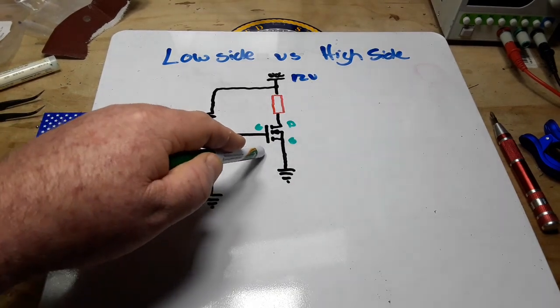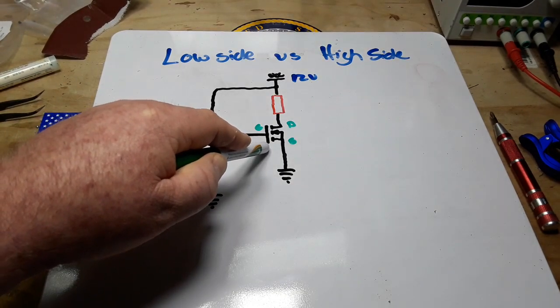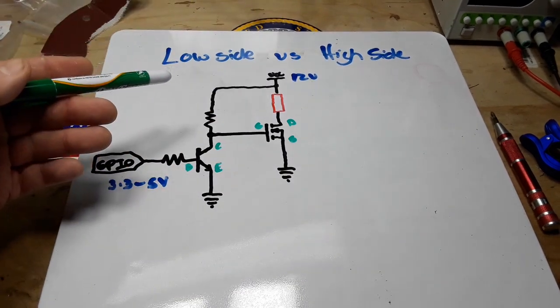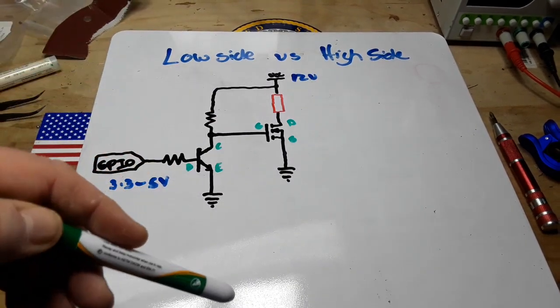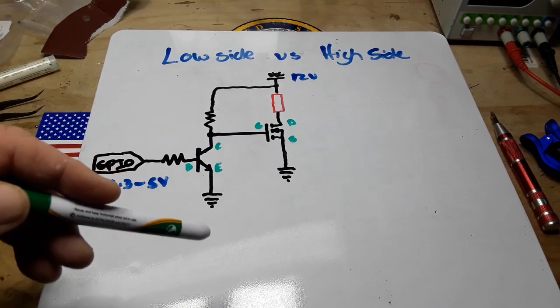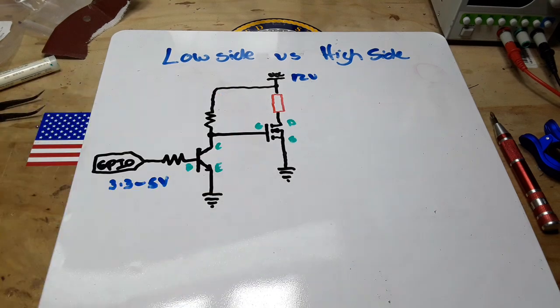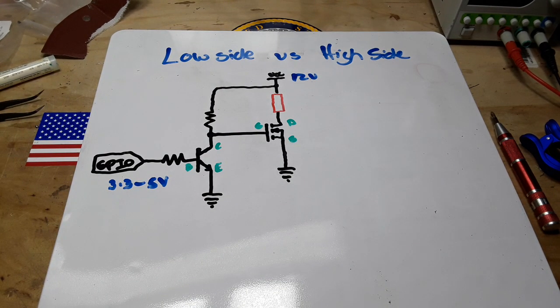And yeah you can do this here, it doesn't have to be a MOSFET, it can be another BJT. Generally in this case it would be a PNP BJT and you drive them like that. So don't confuse this with a Darlington, this is simply one transistor driving another transistor.